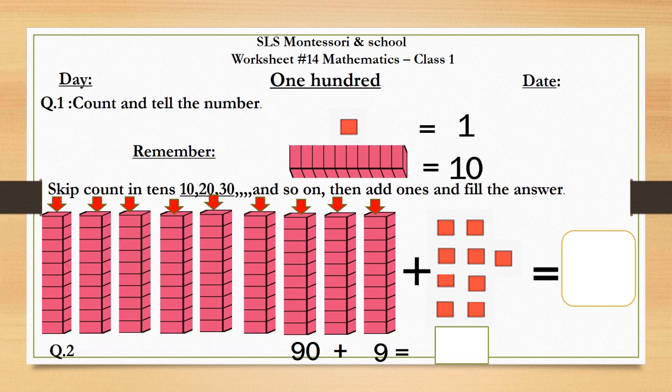And how many single blocks of 1s we have? Let's count them. 1, 2, 3, 4, 5, 6, 7, 8, 9. Think for a second. 90 plus 9 is? Yes, you are right. It's number 99.